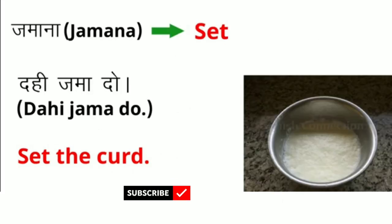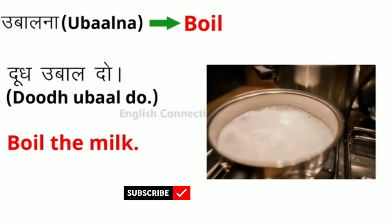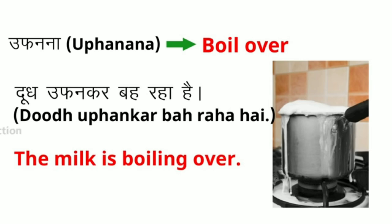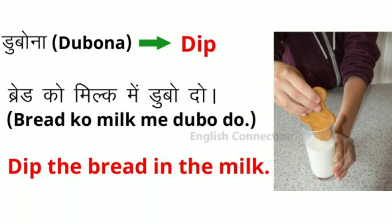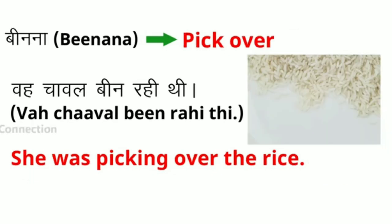The next word is 'set.' Example: check the curd. The next word is 'boil.' Example: boil the milk. The next word is 'boil over.' Example: the milk is boiling over. The next word is 'dip.' Example: dip the bread in the milk. The next word is 'pick over.' Example: she was picking over the rice.